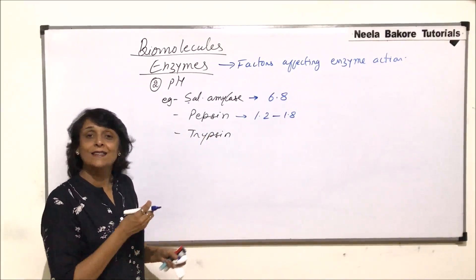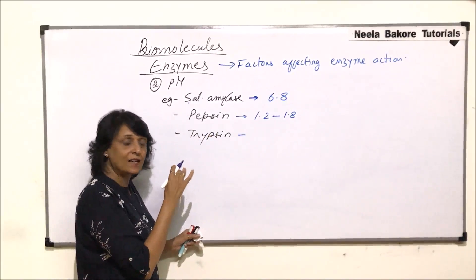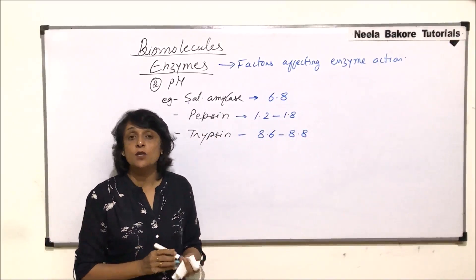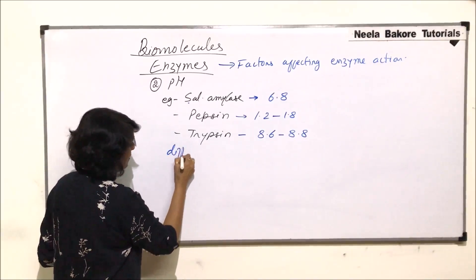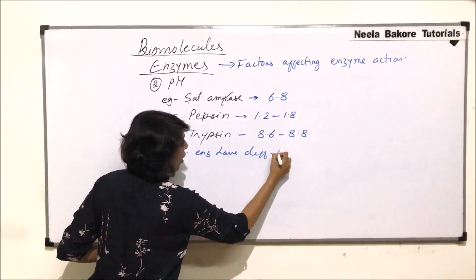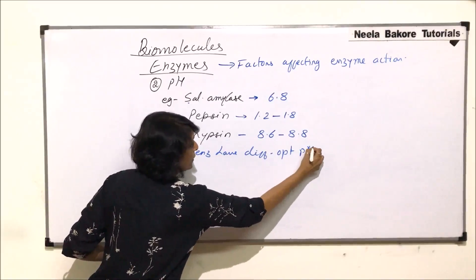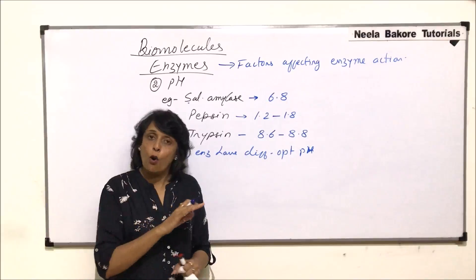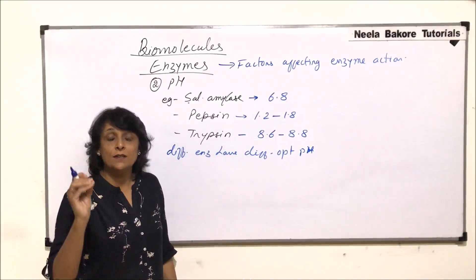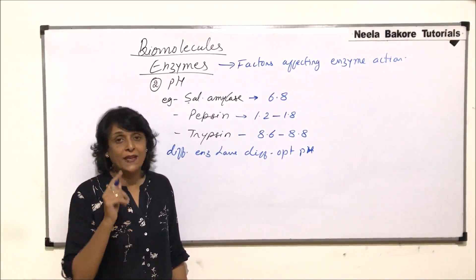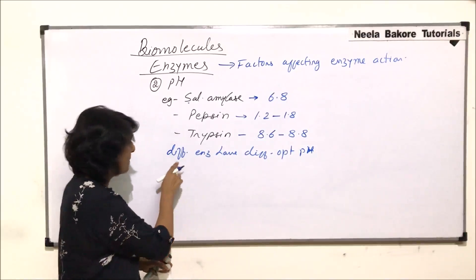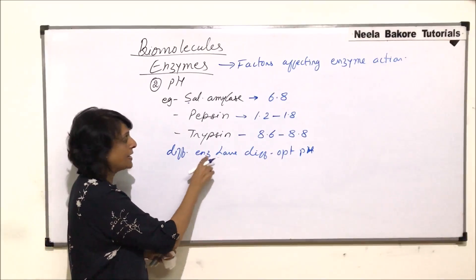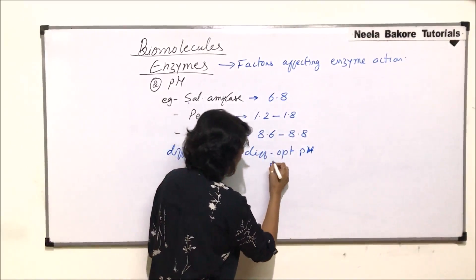Trypsin works in the intestinal part where the medium is alkaline or basic, so the optimum pH is 8.6 to 8.8. That means different enzymes have different optimum pH. If you recall what happened when we talked about temperature — our body temperature is a sub-optimum temperature for all enzymes, but as temperature increases the enzymatic activity comes to optimum. That means all enzymes have the same optimum temperature, but enzymes have different optimum pH.